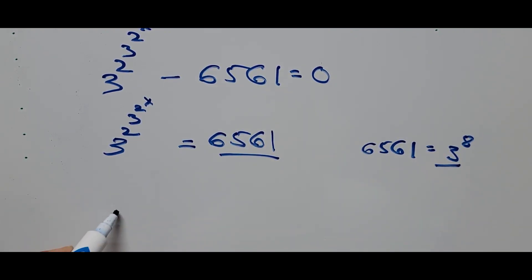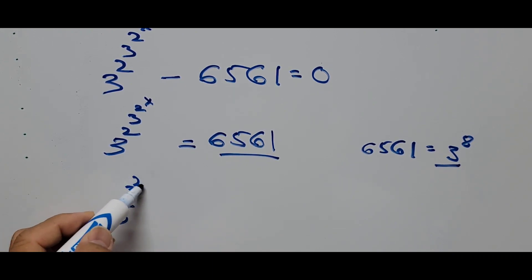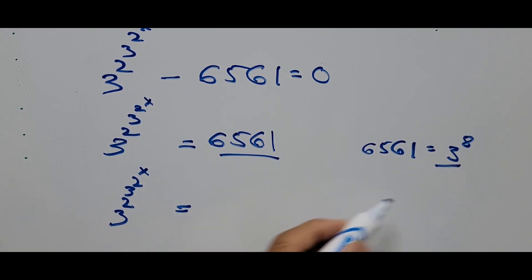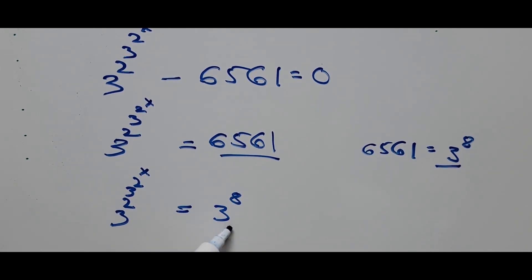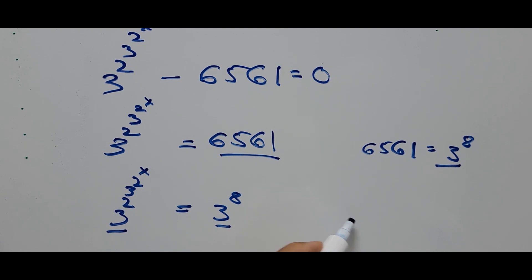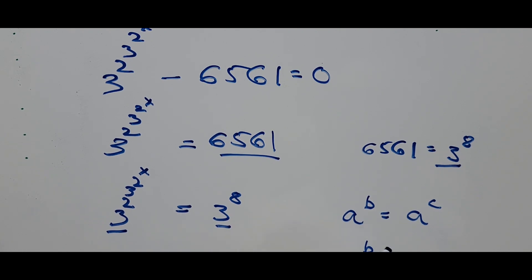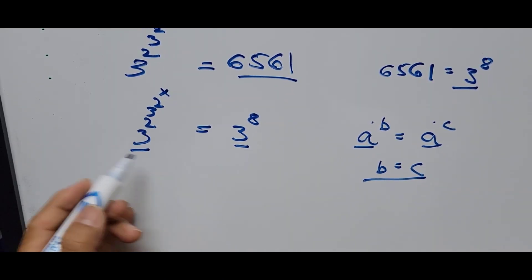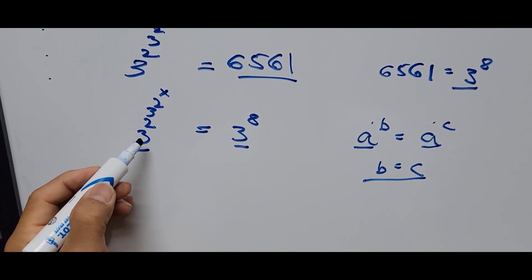The equation is now 3 raised to power 2, power 3, raised to power 2, raised to power x, equals 3 raised to power 8. Since both sides have the same base, we apply the exponent rule: if a^b = a^c, then b = c. So we equate the exponents.